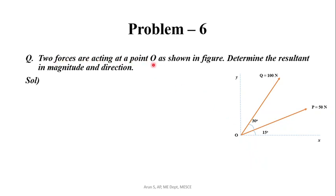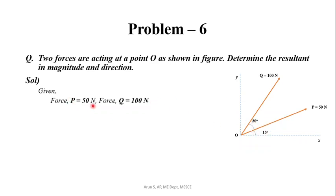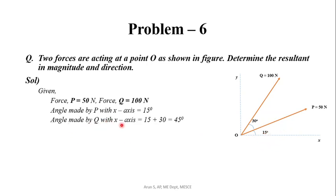Two forces are acting at a point O. We need to determine the resultant in magnitude and direction. The forces are P equal to 50N and Q equal to 100N. Force P is making an angle of 15 degrees with the x-axis. Similarly, force Q is making an angle of 15 plus 30, which is 45 degrees with the x-axis.